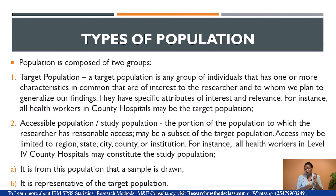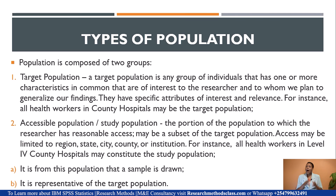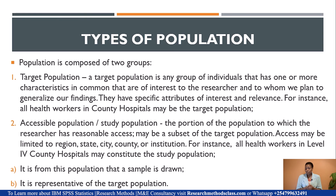We also have accessible or study population. This is the portion of the population to which the researcher has reasonable access, and it is mainly a subset of the target population. This access may be limited to a region, a state, a city, or an institution. So though we wanted to study health workers in a particular county, the accessible population may be only those in Level 4 facilities — those who are the best to answer the research problem, not merely the most convenient.